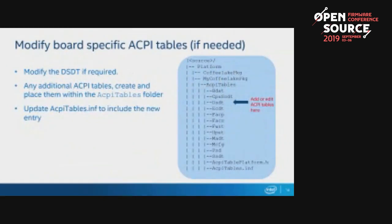You can modify the board-specific ACPI tables if needed — this step is optional. You can modify the DSDT if required, create any additional ACPI tables and place them within the ACPI table folder, and then update the ACPI table INF file to include the new entry.